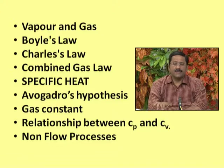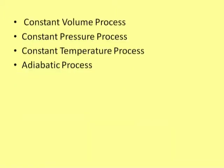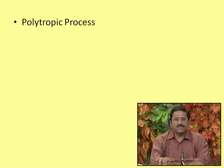Then we have seen flow processes and non-flow processes. In non-flow processes we learned first the constant volume process, then the constant pressure process, the constant temperature process — isothermal process — and the adiabatic process. Today we will learn the last process under this section, that is the polytropic process. Our today's objective is to learn the polytropic process.